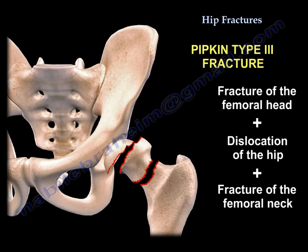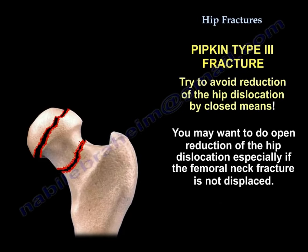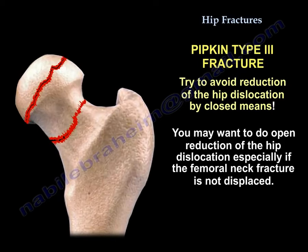Another interesting injury is the PIPKIN type 3 fracture, which involves a fracture of the femoral head plus dislocation of the hip plus a fracture of the femoral neck. Avoid reduction of the hip dislocation by closed means. You may want to perform an open reduction of the hip dislocation, especially if the femoral neck fracture is non-displaced.